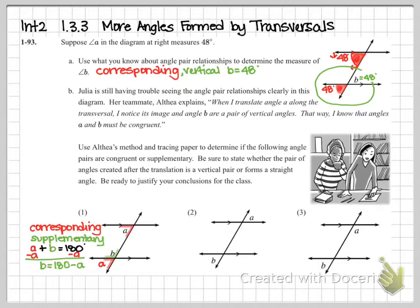For problem one, I color-coded: I took angle A, found its corresponding angle (coded red), and moved it down. Then A and B are right next to each other — putting them together makes a straight line, giving us supplementary. So A plus B equals 180 degrees, meaning B equals 180 minus A. The original angle A and original angle B are supplementary to each other.